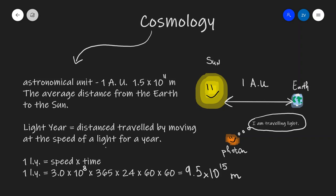Additionally, we need to remember that a light year is the distance travelled by moving at the speed of light for a year. Just be careful — remember it's a unit of distance. We can calculate one light year by multiplying the speed of light by the number of seconds in a year: 3 times 10 to the 8, times 365 days, times 24 hours, times 60 minutes, times 60 seconds, giving us 9.5 times 10 to the power of 15 meters.